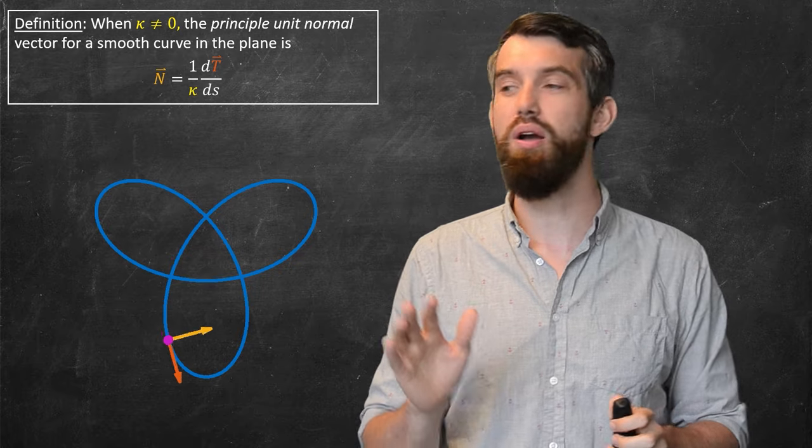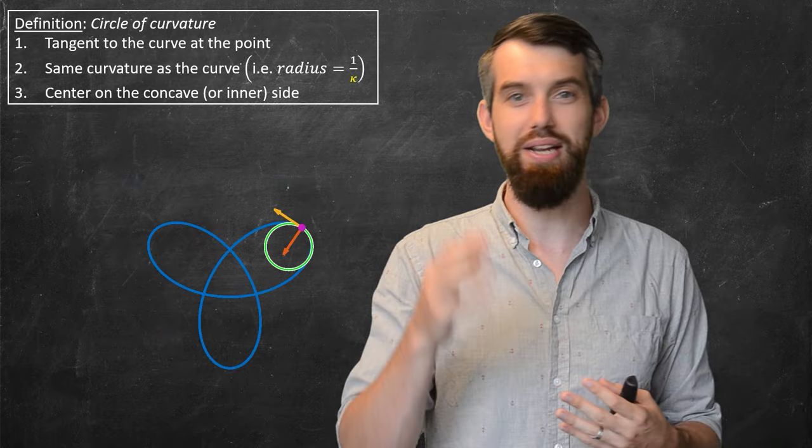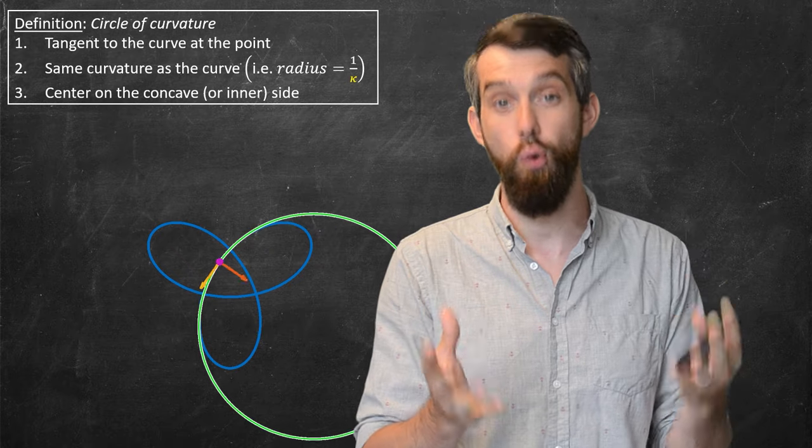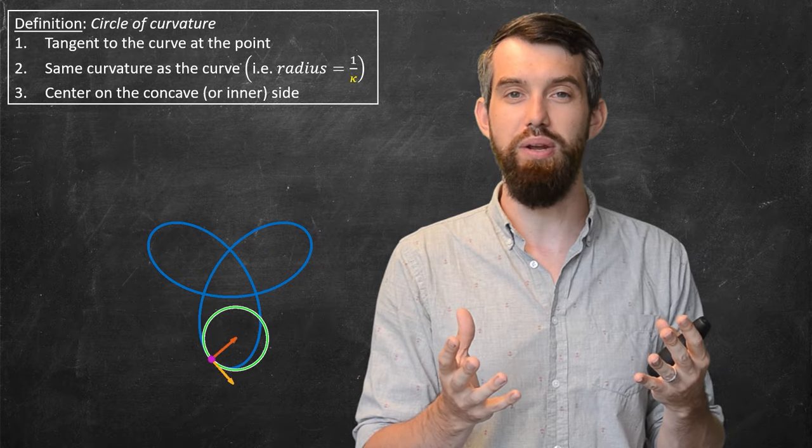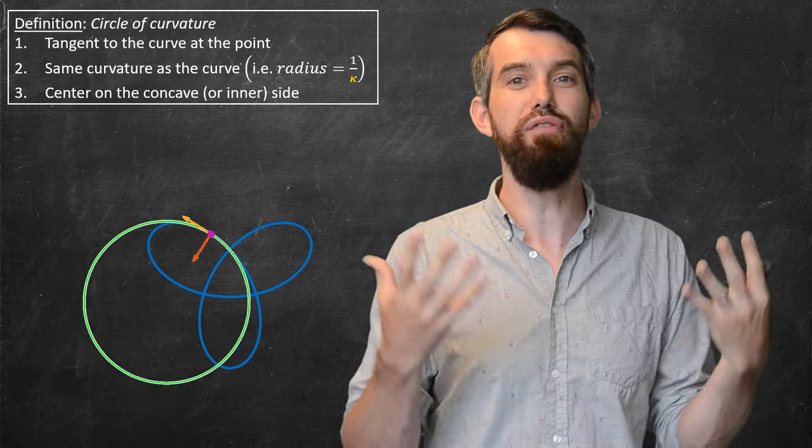One more concept for this video. I want to talk about circles of curvature. Same picture I had before. I've got my tangent vector and I've got my unit normal. But now what I'm doing is I am drawing, at any point, a circle of curvature.